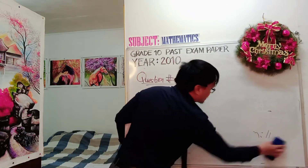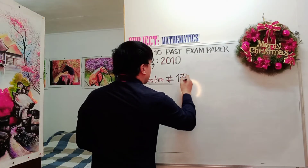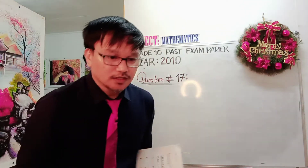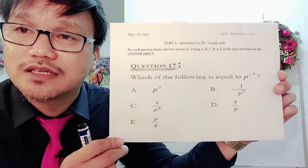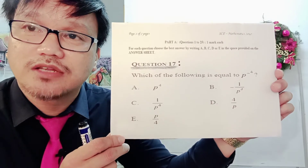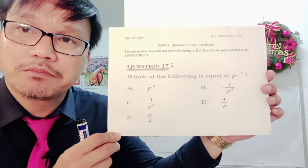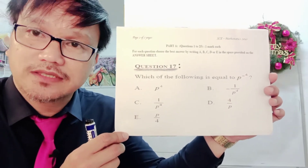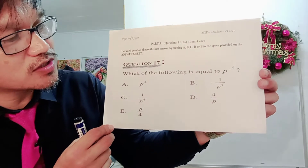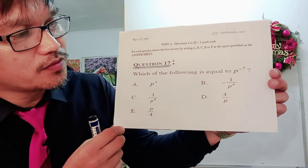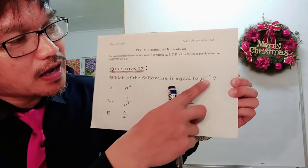We've done question number 16, so let's now have question number 17. Question number 17 is on the topic indices. Take note, grade 10 students — this topic, indices, will always come out in your national examination. So you better master the rules of indices so that when you encounter it in the national exam, you will be able to answer the question just like this one. Question number 17 is: which of the following is equal to P to the power of negative 4?